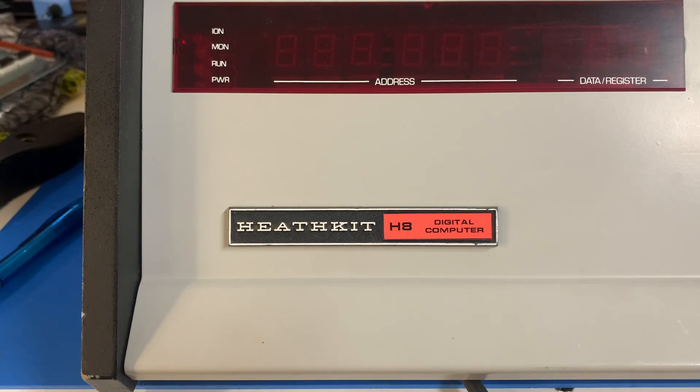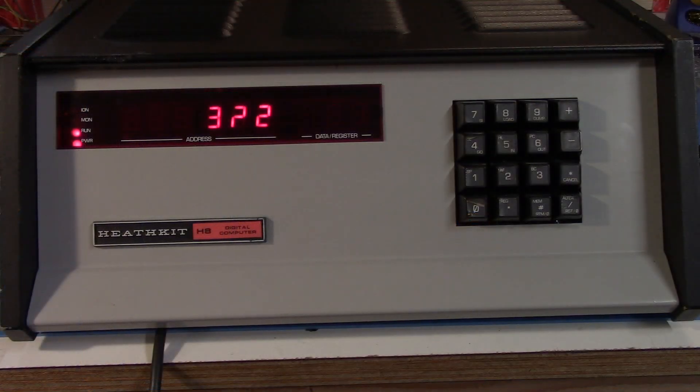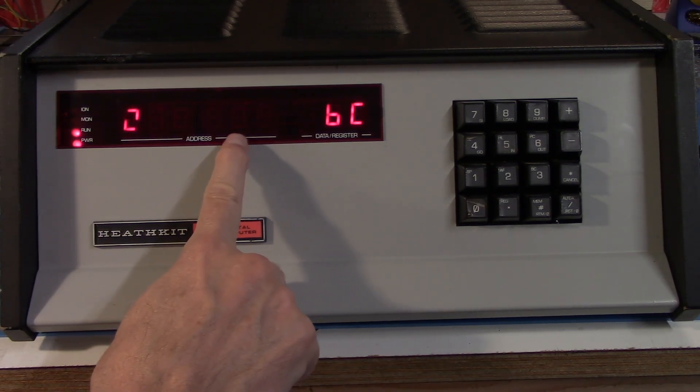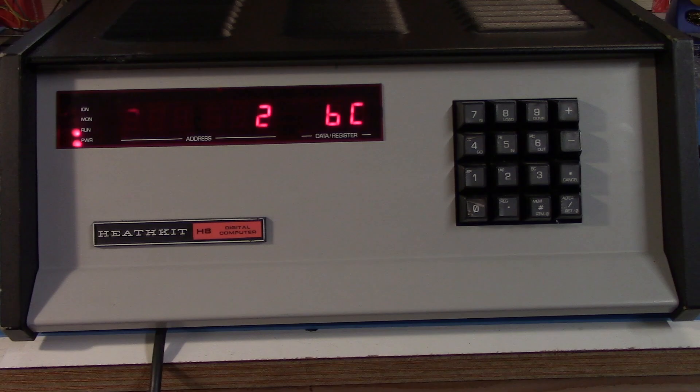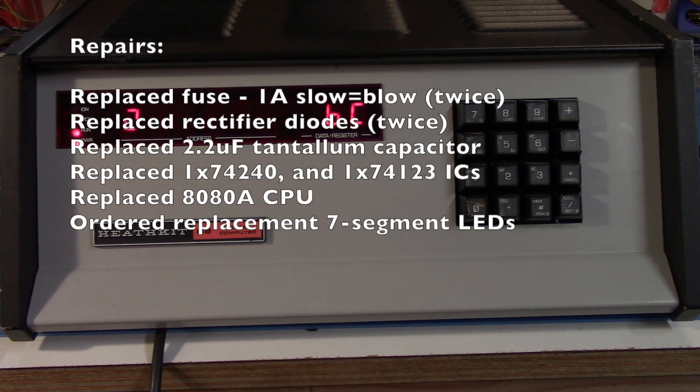There are still some things, though, that I need to address. Two of the things are, of course, the two lights that are missing. But I have some missing segments in some of the LEDs on the front panel. So I did find some replacements for those on eBay. And I went ahead and ordered four, even though I only have two bad ones, just so I have some spares.